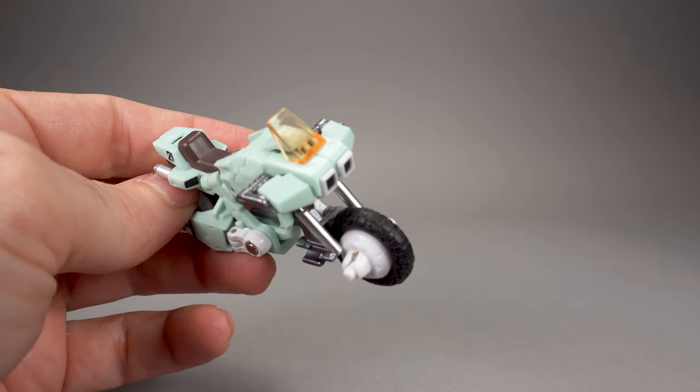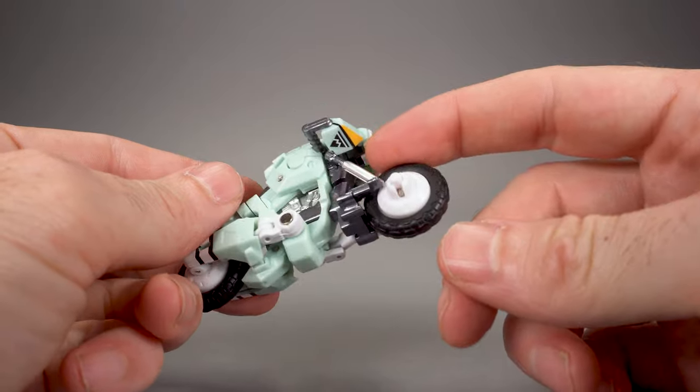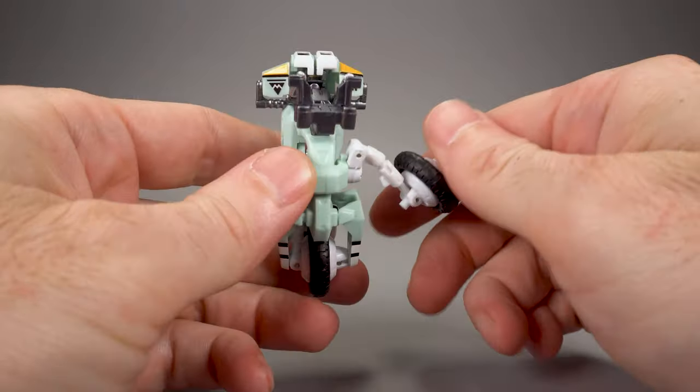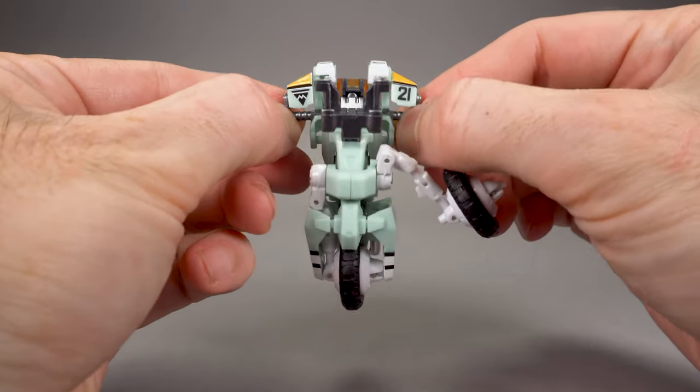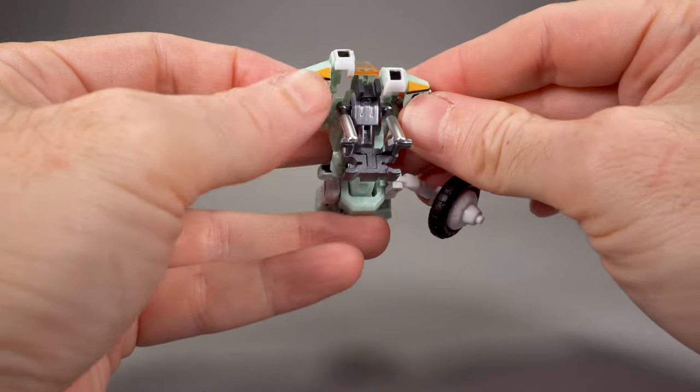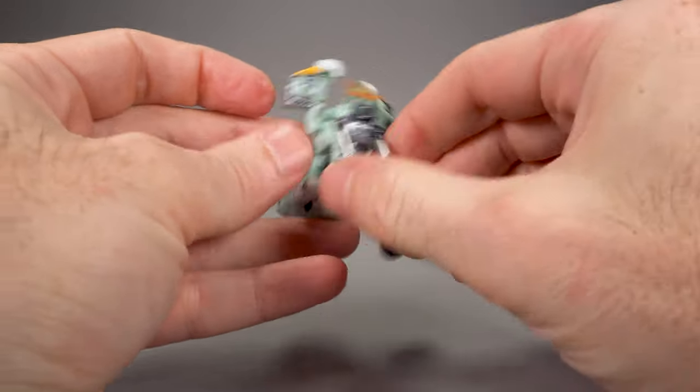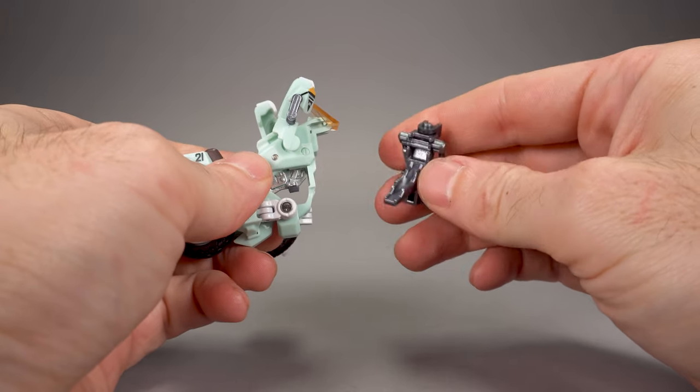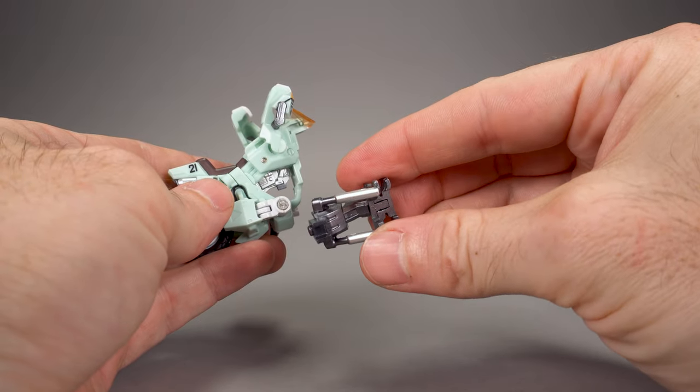This next step is significantly easier if you're not using the included fairing holder up in the front. But what you're going to do is take the front wheel and spin it back, then pull your fairings out. You're going to swing your fairings up like so, and then that allows you to slide out this section in the middle. And this we can put aside. We're not going to need it anymore.